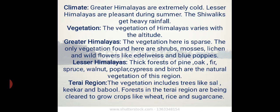The vegetation of the Himalayas varies with altitude. In the greater Himalayas, the vegetation is sparse — only shrubs, mosses, lichen and wildflowers like edelweiss and blue poppies are found. In the lesser Himalayas, thick forests of pine, oak, fir, walnut, poplar, cypress and birch form the natural vegetation.